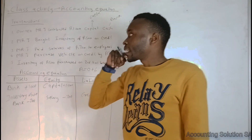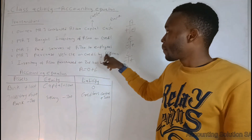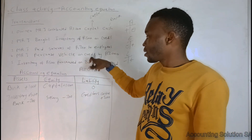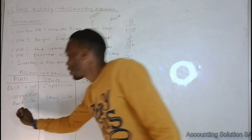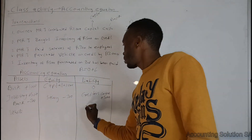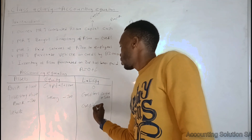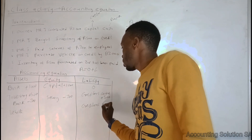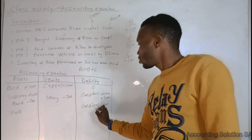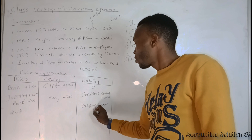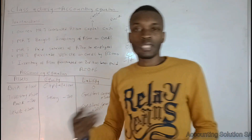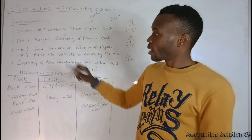Transaction four: Mr. J purchased a vehicle on credit for 2,000. Vehicle is an asset and credit means liability. So we have vehicle under assets — it increases because we bought a vehicle, giving us more assets. We also have creditors control under liability, which increases. Both vehicle and creditors control get plus 2,000.